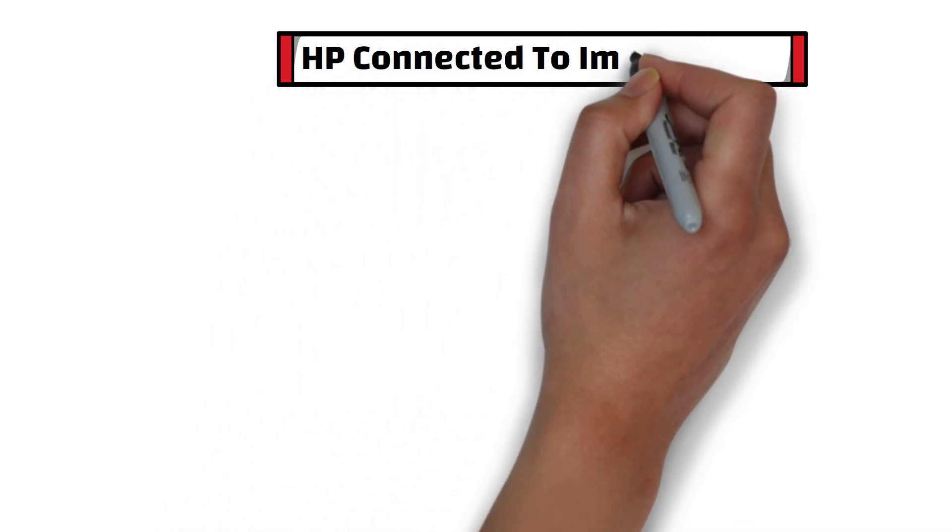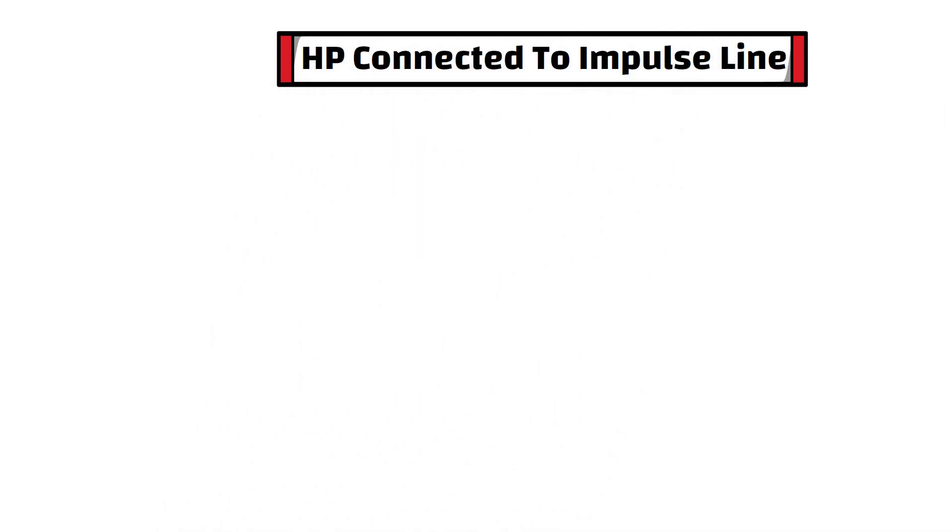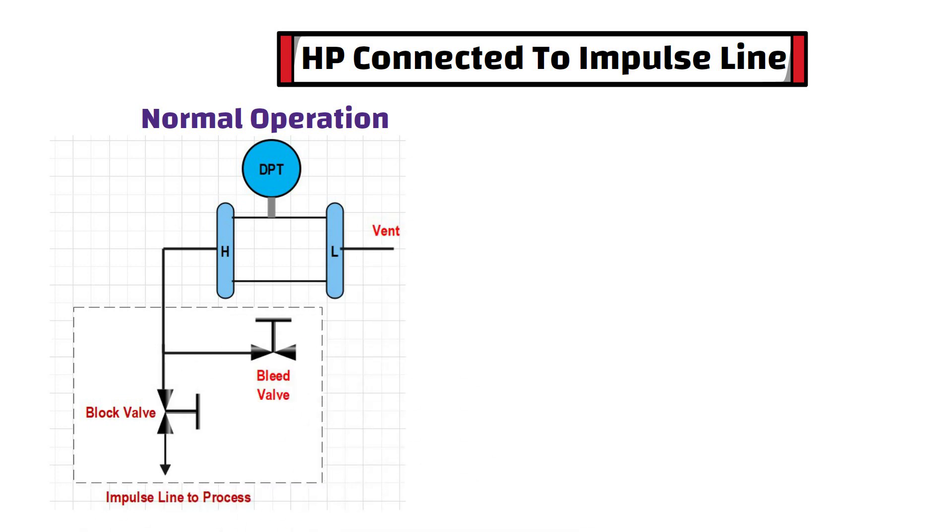Let's take one more example, when only high port side of DP transmitter is connected to impulse line and low port side remains open to air. As you can see, in this situation, in normal operation, block valve is in open condition and bleed valve is in closed condition.